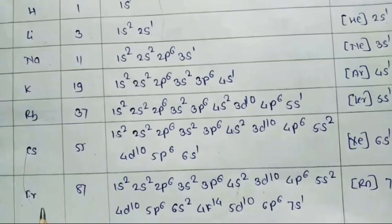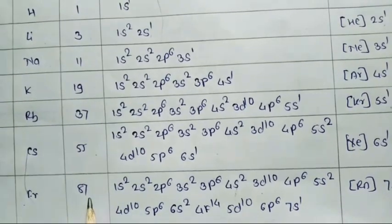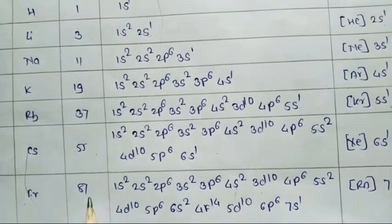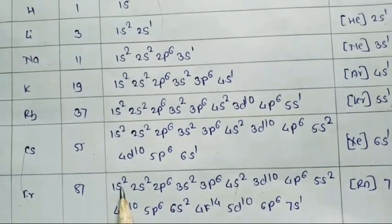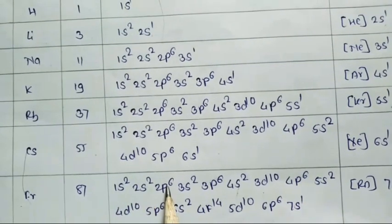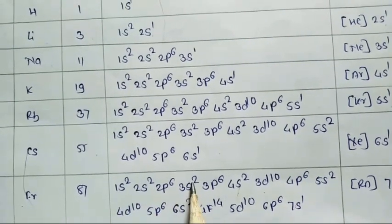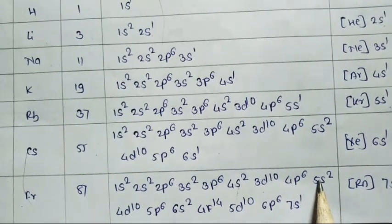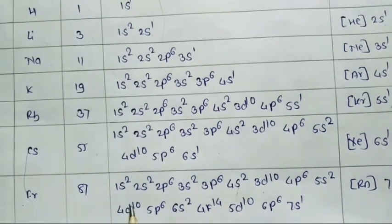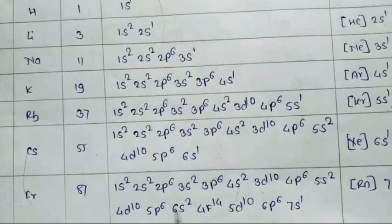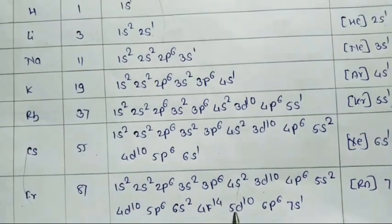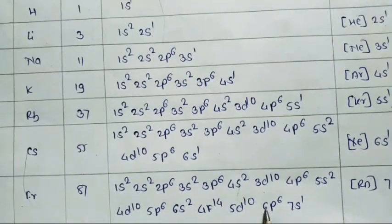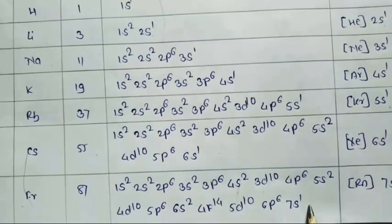Francium (Z=87): 1S2 2S2 2P6 3S2 3P6 4S2 3D10 4P6 5S2 4D10 5P6 4F14 5D10 6P6 7S1, condensed [Rn] 7S1.